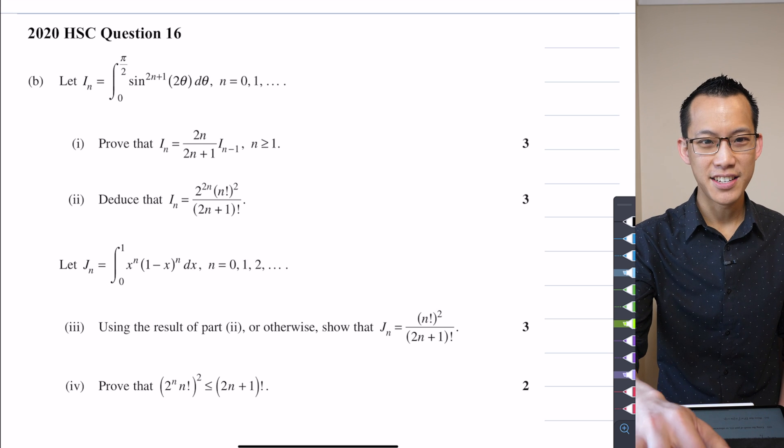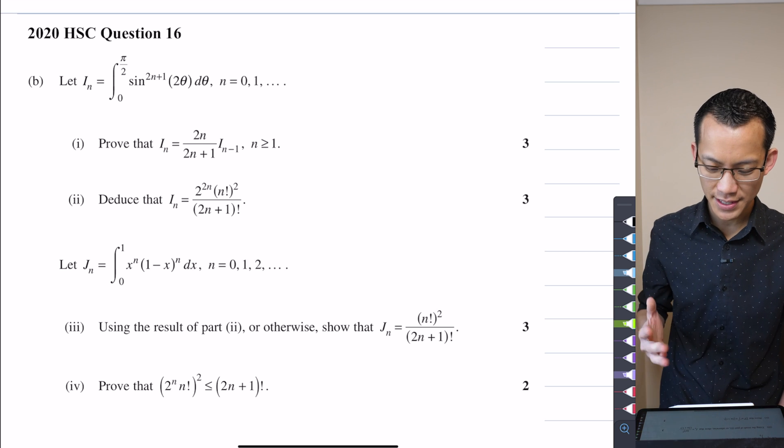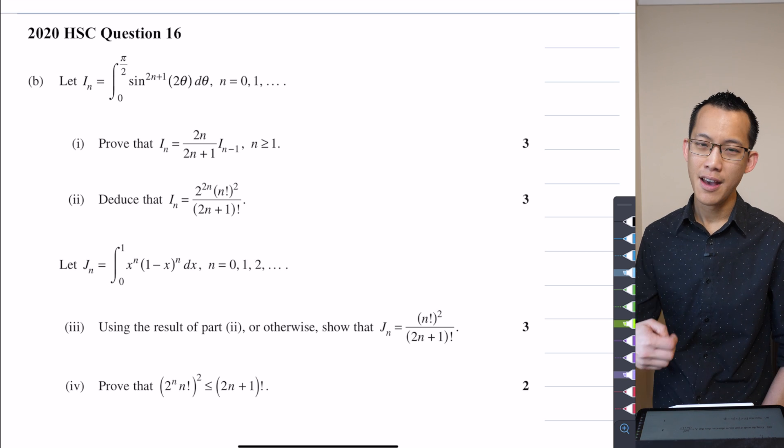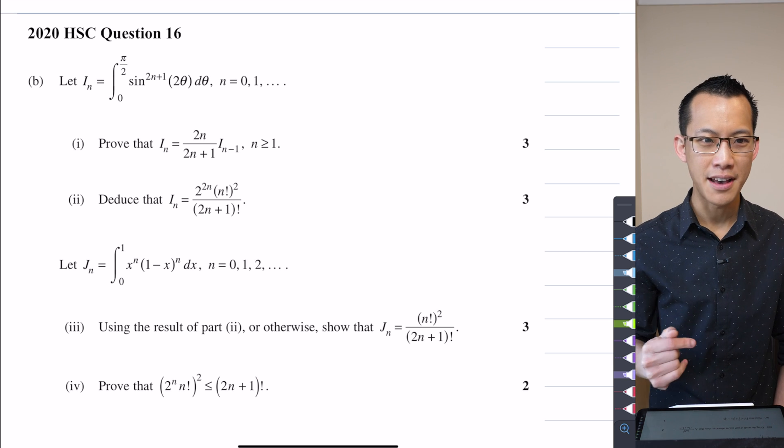Here it is, last year's HSC question 16, so the last one, and it's part B. You can see the 11 marks here on the right-hand side. There's four parts to this question, and we're going to do it in three acts, as it were.